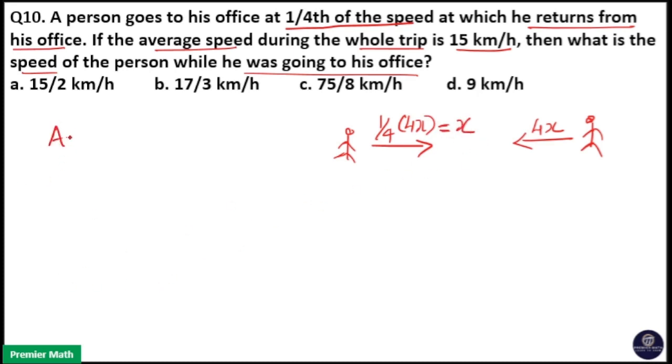So here you already know the average speed formula is 2·s1·s2 divided by s1 plus s2. That means here average speed is 15 kilometers per hour, and 2 into speed 1 is x and speed 2 is 4x, divided by 4x plus x, which is 5x. This x and x cancel, that means 8x by 5.